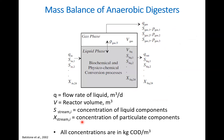The first step to model processes is to make mass balances around the reactor. If we look at this schematic, the reactor can have two phases: a gas phase and a liquid phase. The liquid phase has biochemical and physical-chemical reactions, as well as conversion processes inside it.